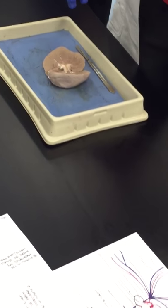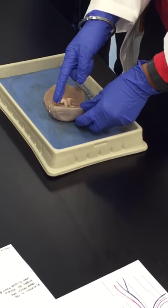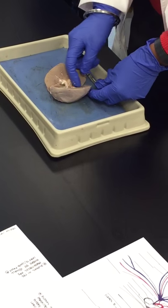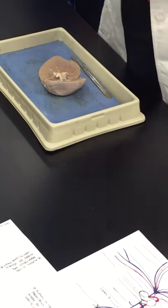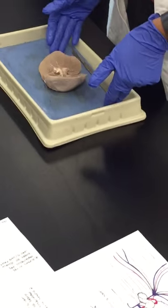The nephrons, which are the functional units of the kidney, each start from the cortex but keep going in and out, so they span the whole kidney.